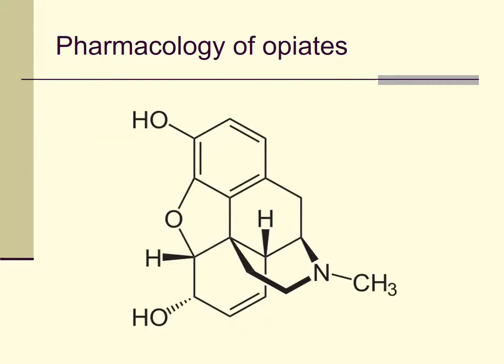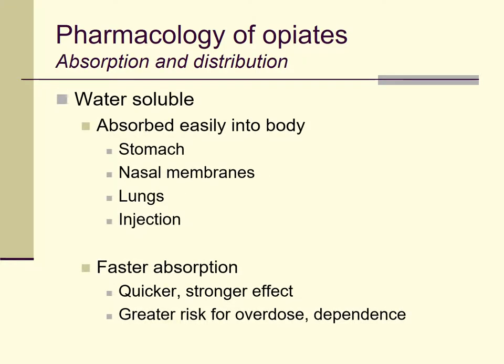Let's talk briefly about the pharmacology of opiates. This is a molecule of morphine. In general, these drugs are all water-soluble, meaning they're fairly easily absorbed into the body — through the stomach by drinking laudanum or taking a pill, through the nasal membranes by snorting, through the lungs by smoking, or directly by injection. In general, the faster the drugs get into the body, the quicker and stronger the effect, and also the greater the risk for overdose and dependence.